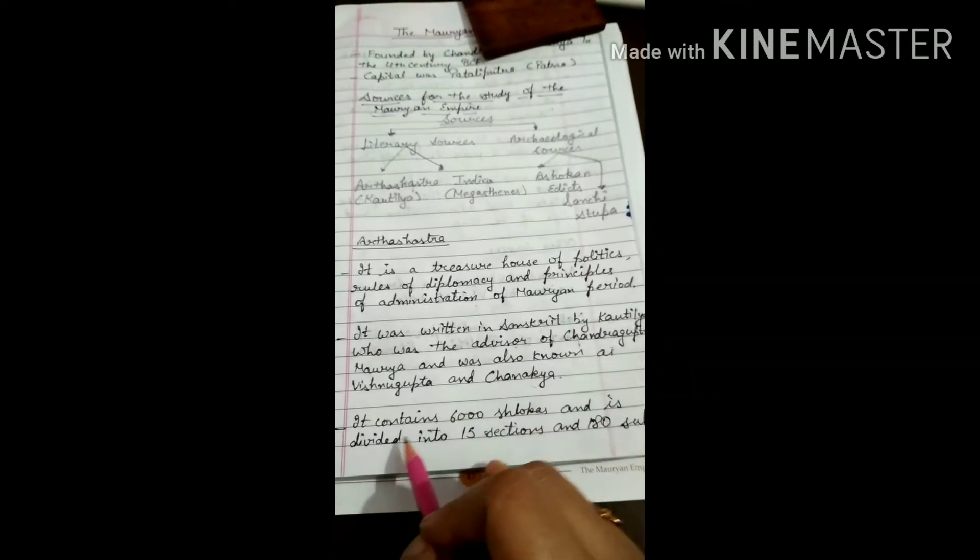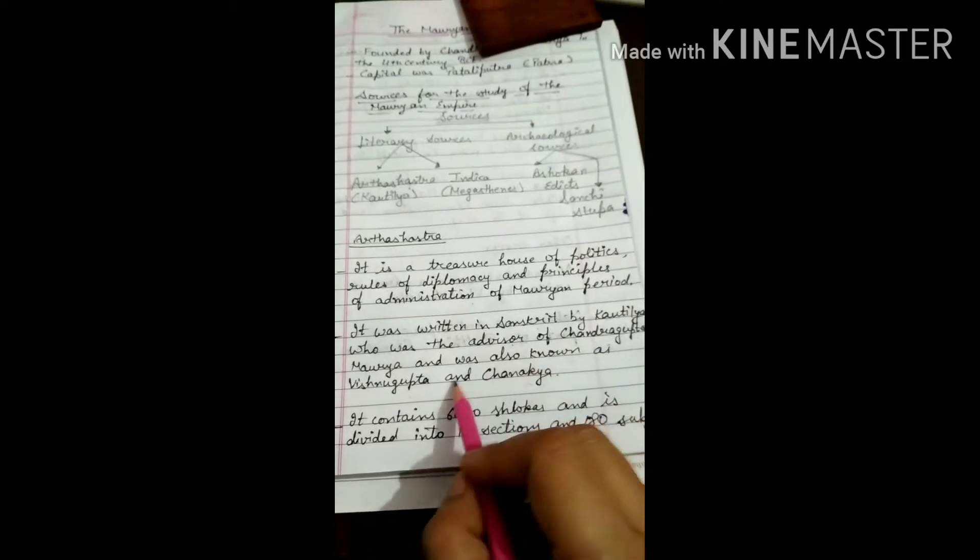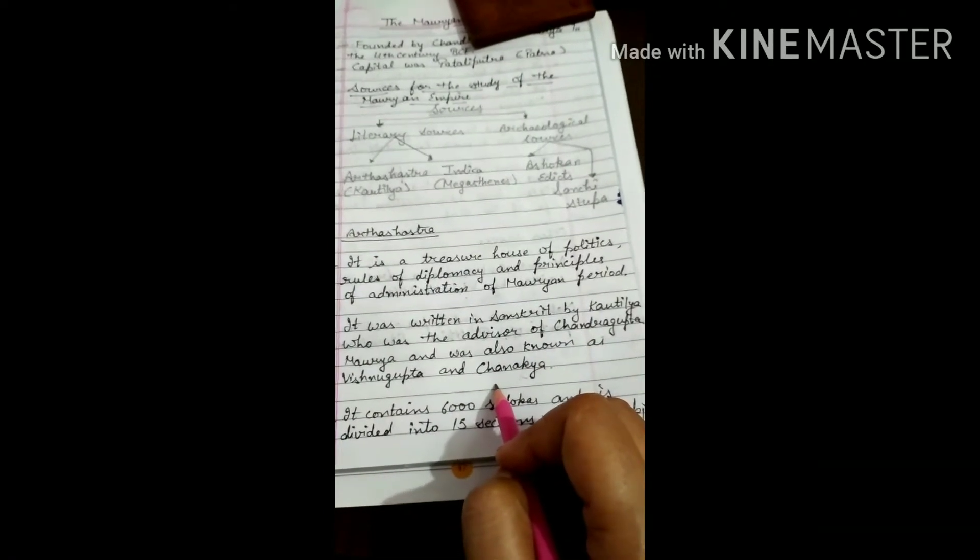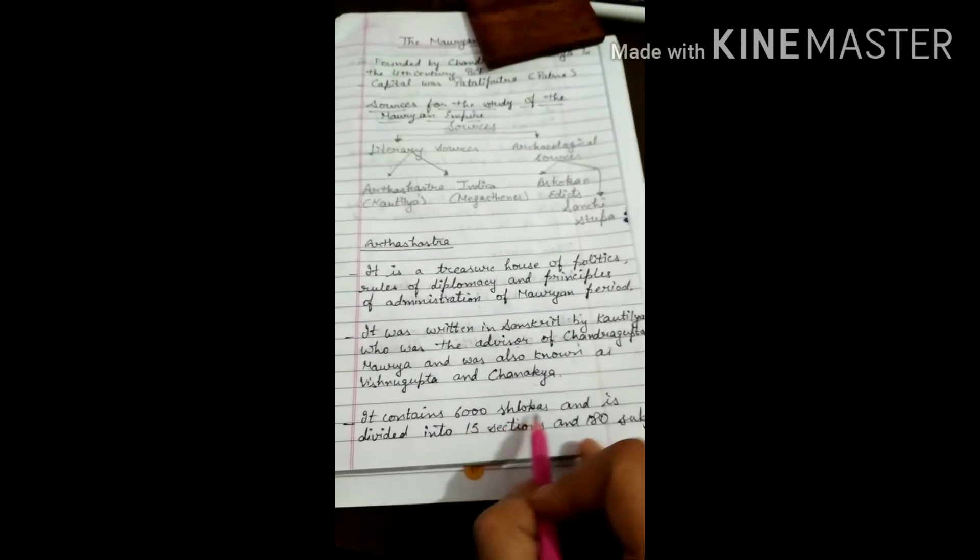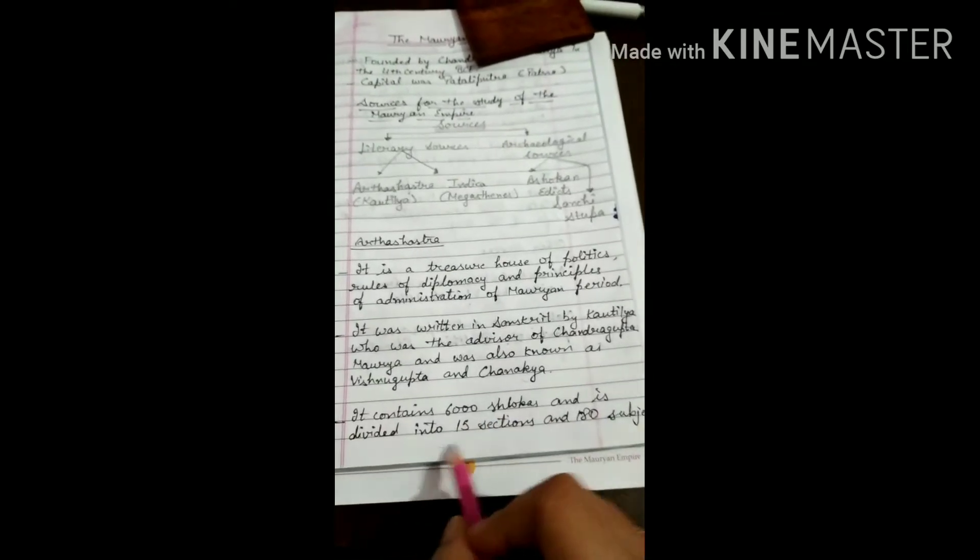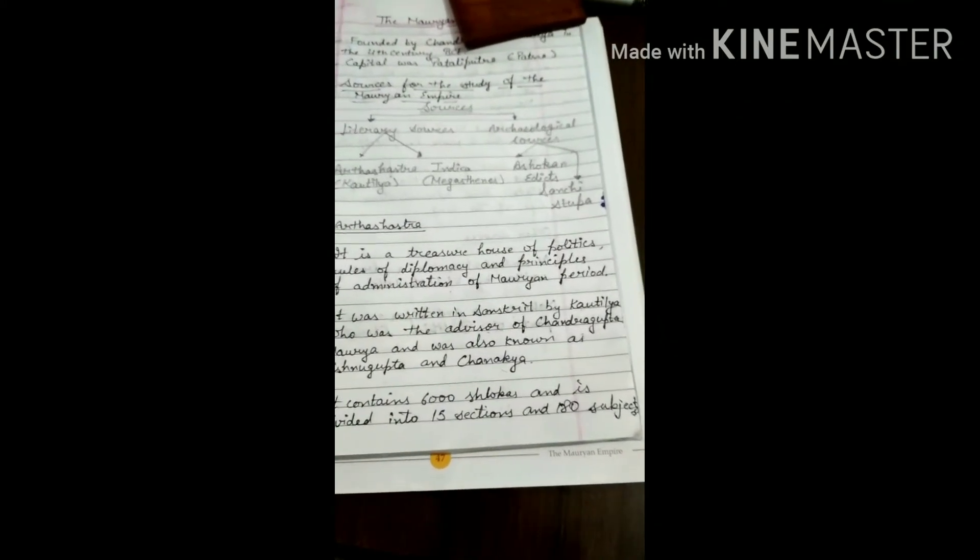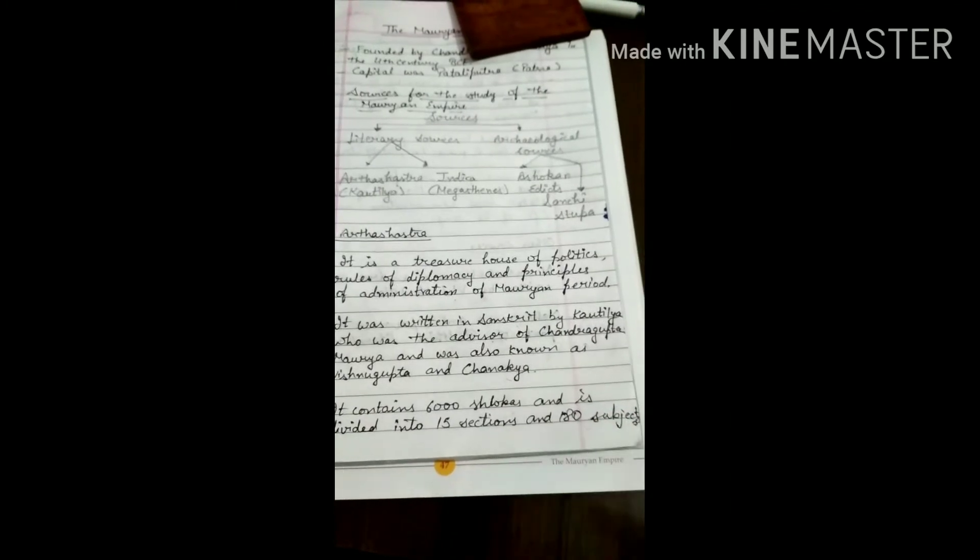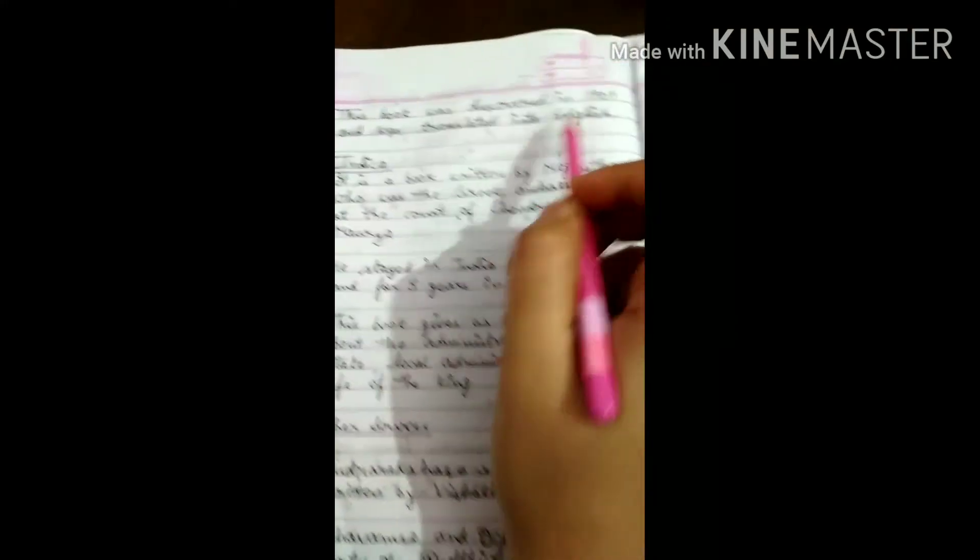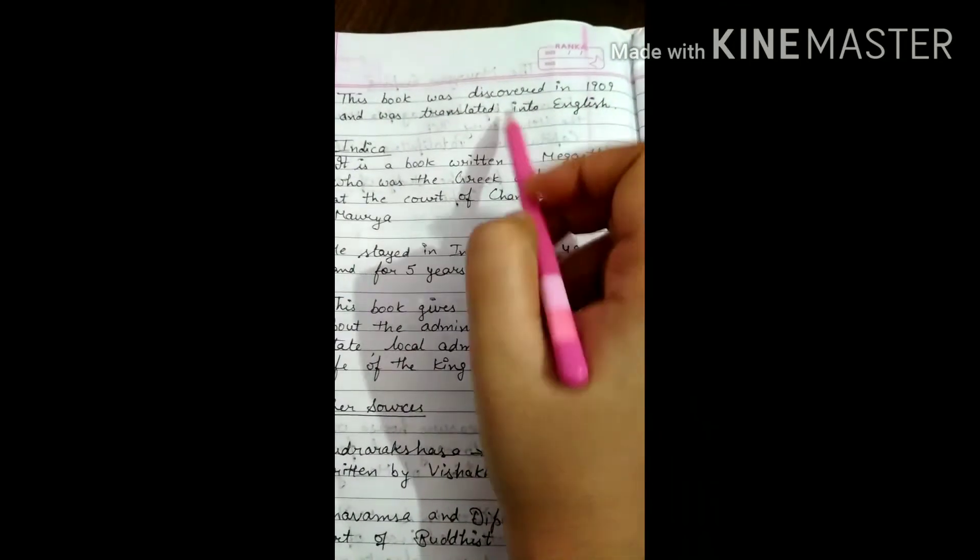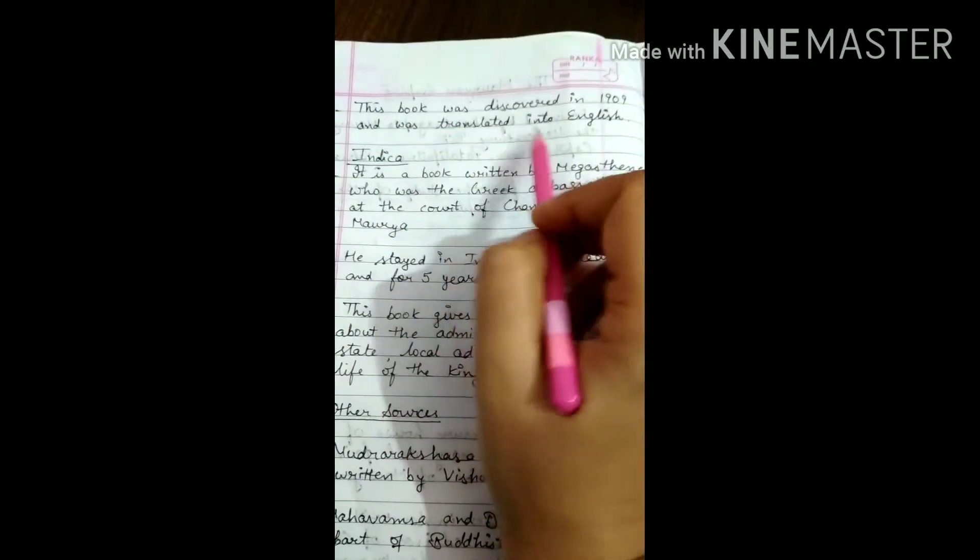Arthashastra contains 6,000 shlokas and it is divided into 15 sections. It has 180 subjects given. This book was discovered in 1905 and was translated into English.